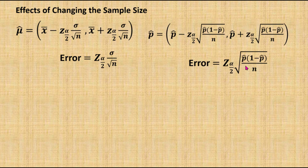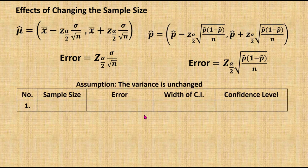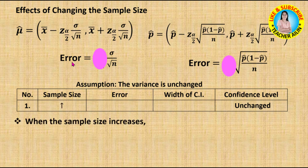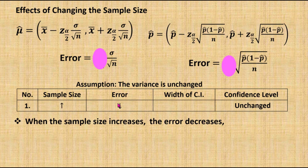Now I'm going to discuss: if the sample size changes, what are the effects on the estimation error, the width of the confidence interval, and the confidence level? If I wish to keep the confidence level unchanged, since the z value is related to the confidence level, then the z value is also unchanged. When the sample size increases, since error is inversely proportional to the sample size, the estimation error decreases. When the error decreases, the width of the confidence interval becomes smaller.